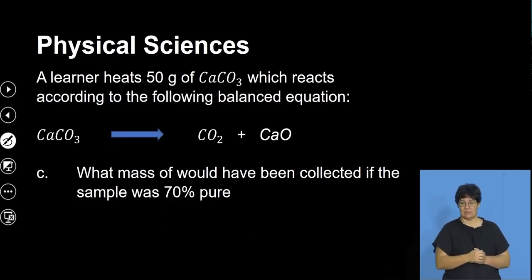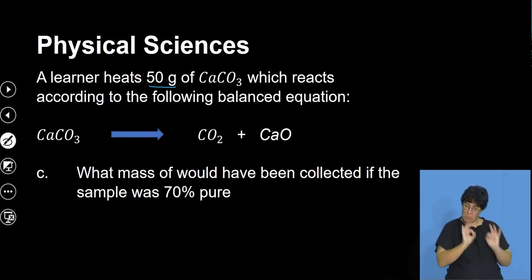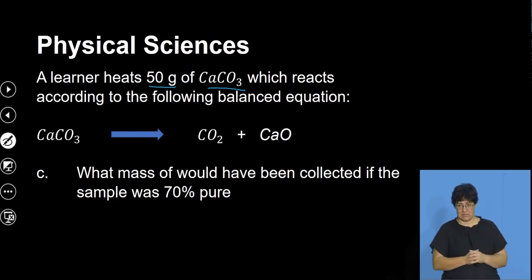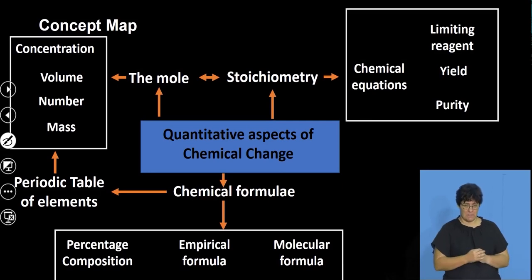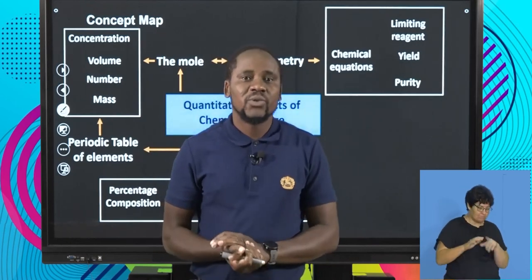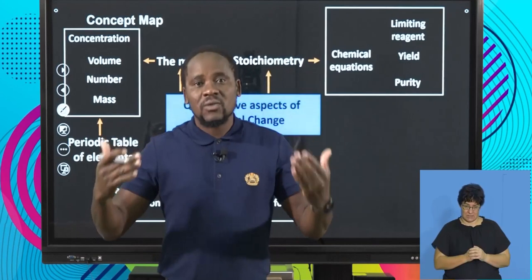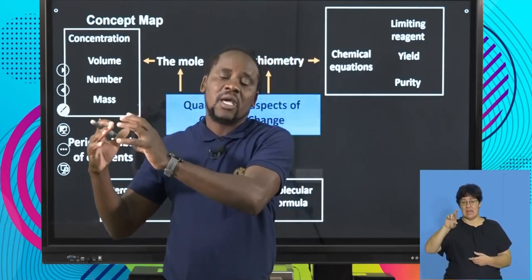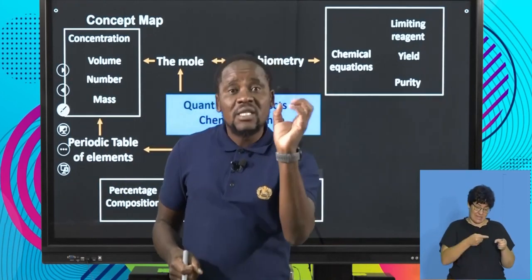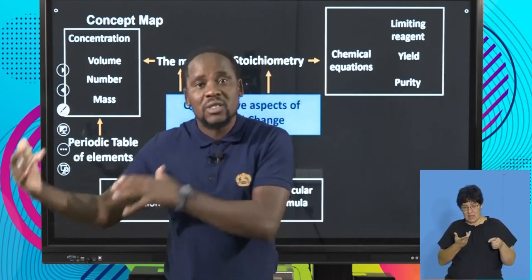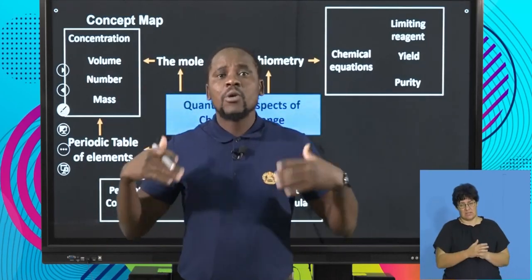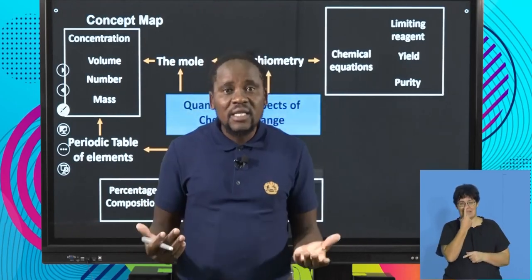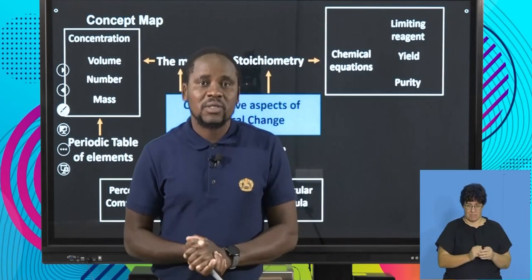The main idea is that if a 50-gram sample contains impurities, then only a certain percentage of that mass is actually pure calcium carbonate and the rest is impurities. There will be many different examples involving percentage purity, but note that the balanced equation gives us the stoichiometric ratio. If 100% pure gives a certain mass, we use that to determine what forms at a lower purity. More practice will definitely go a long way in understanding percentage purity in problem solving.